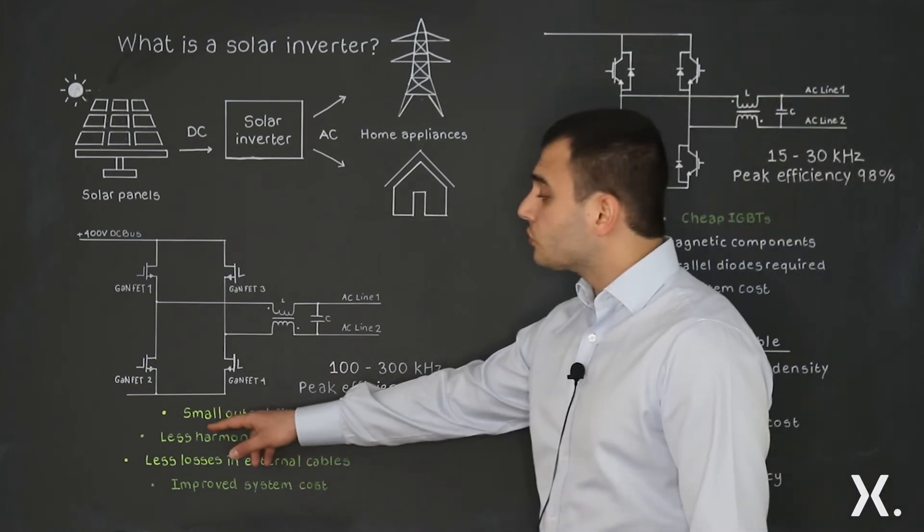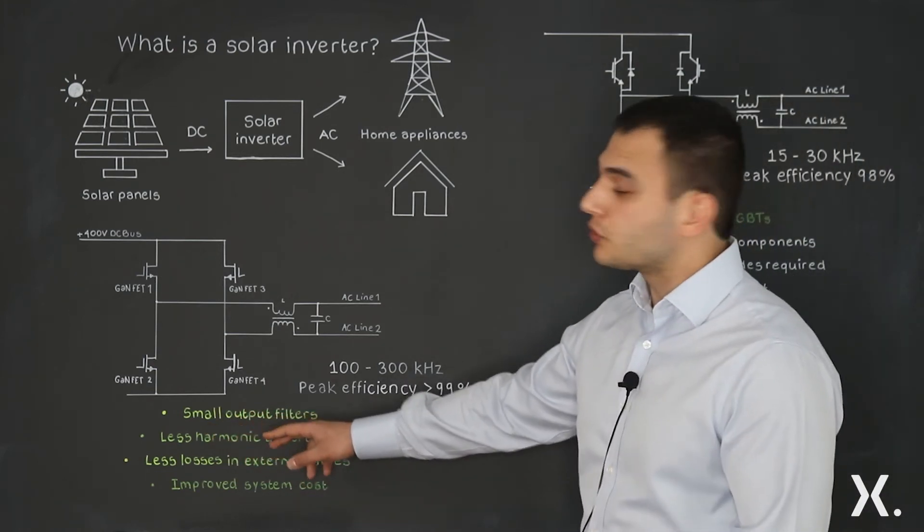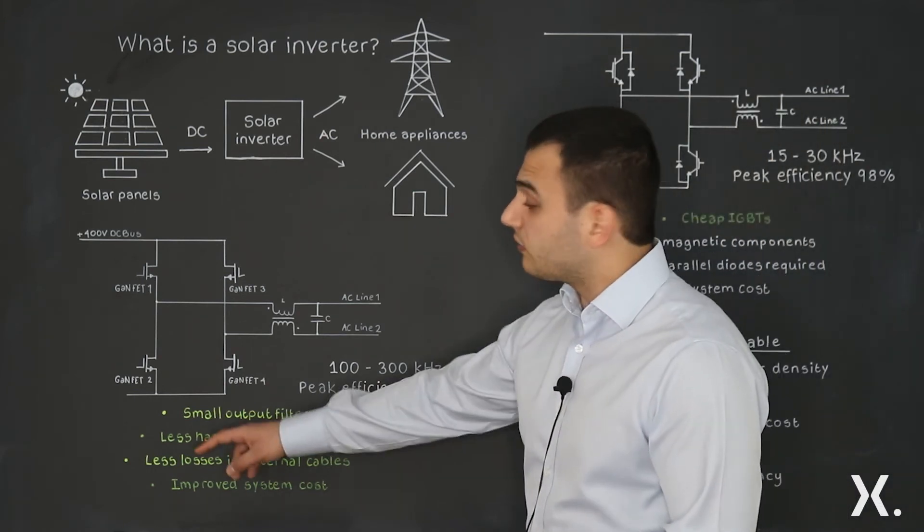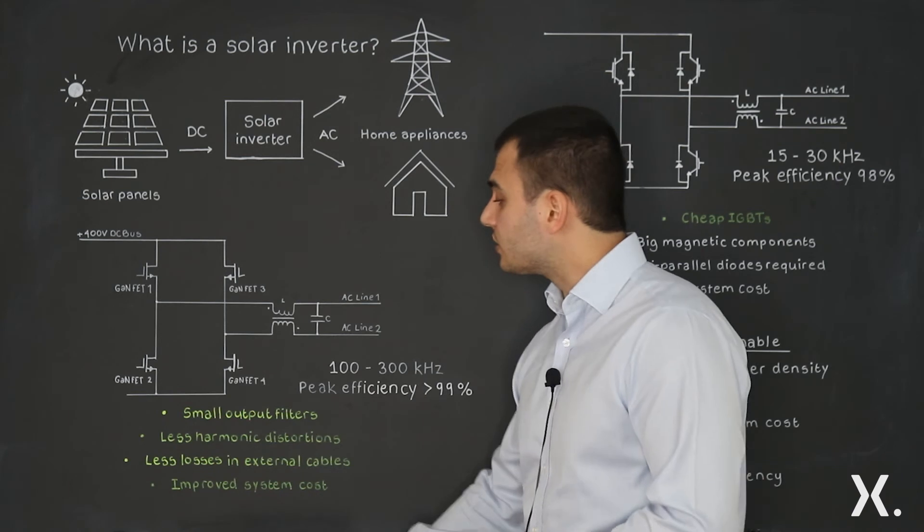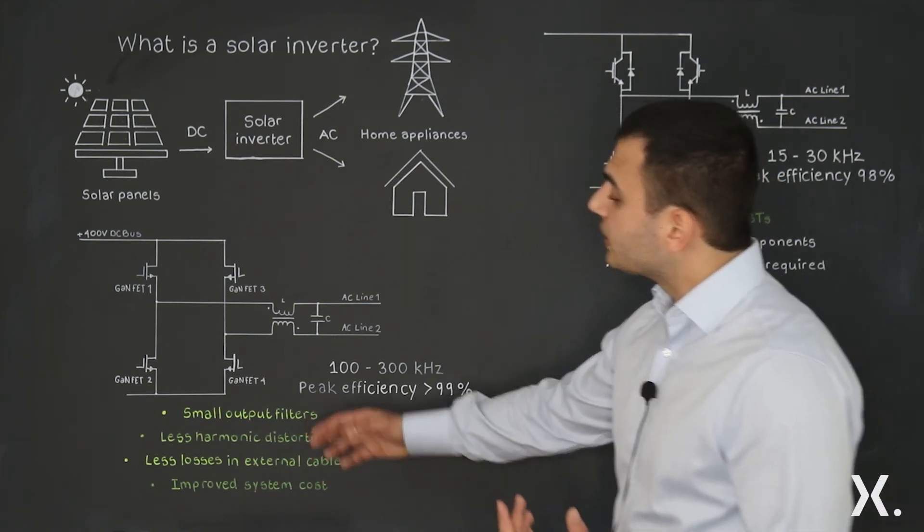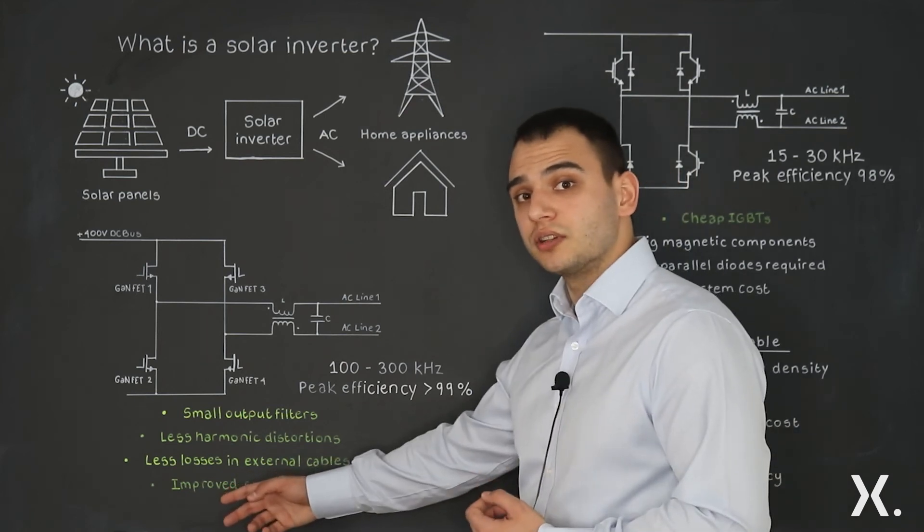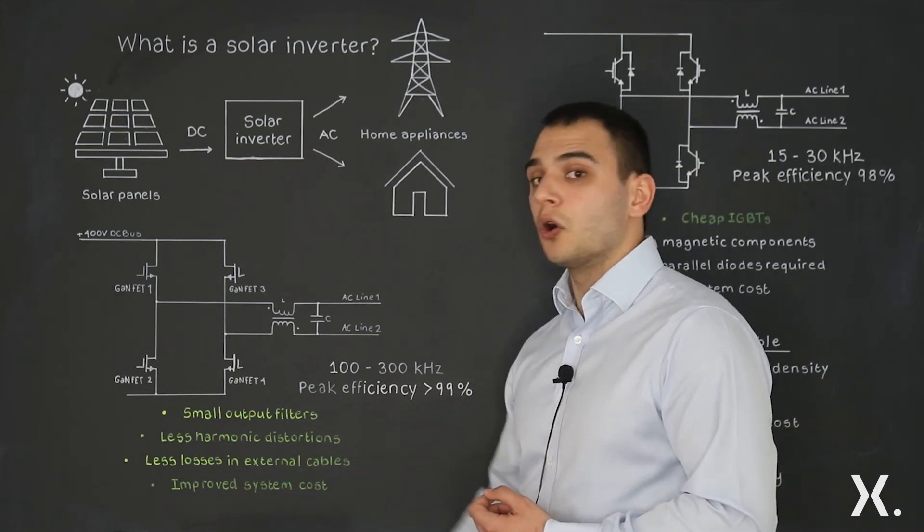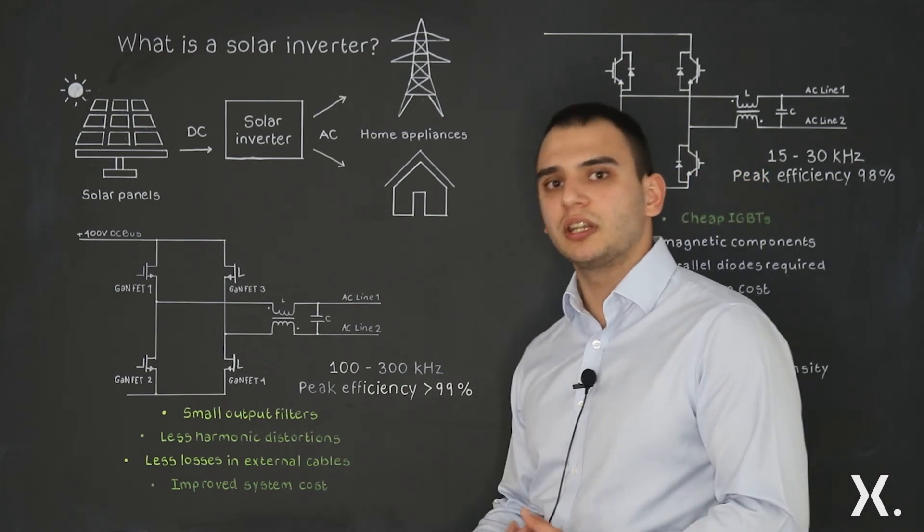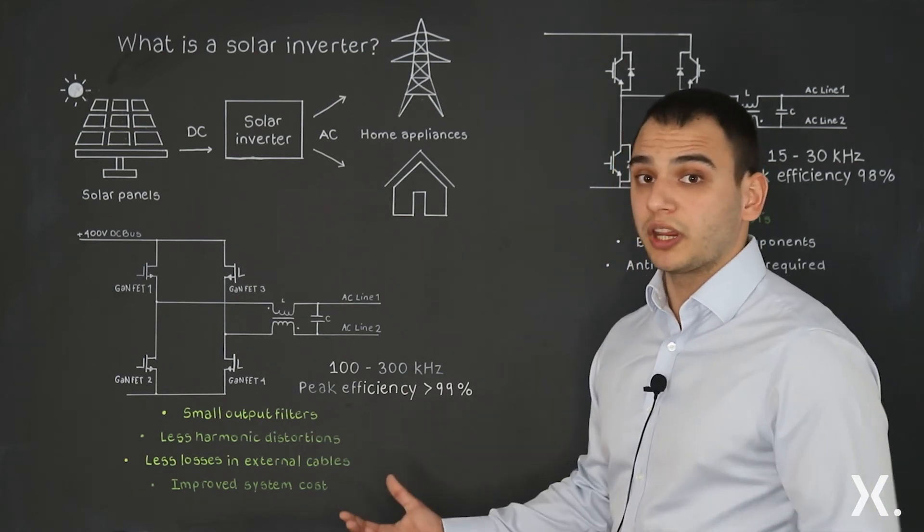This results in really small output filters and increased power density. We have less harmonic distortions because of the higher frequency and the higher fidelity of the signal, and this in itself results in less losses in the external cabling. When you have less losses in the external cabling, this means you can use less insulation in the cables and you can use cheaper cables.